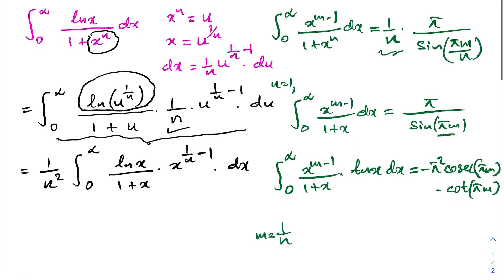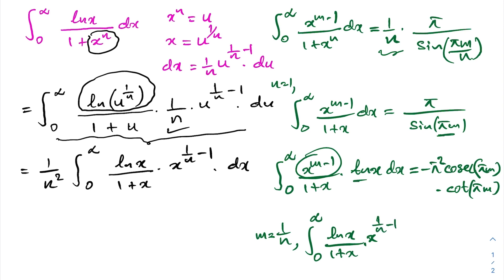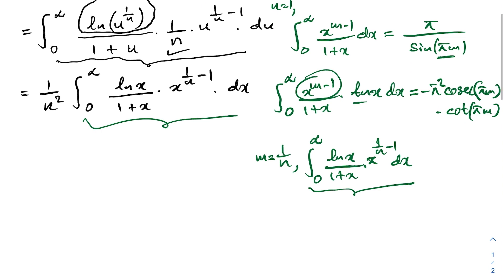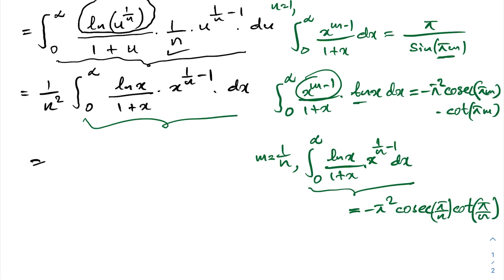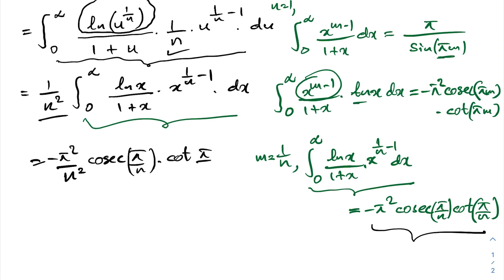Now I set m equal to 1 over n. The left side becomes exactly the integral from 0 to infinity of x to the 1 over n minus 1 times natural log of x over 1 plus x, dx, which matches our transformed integral. Combining with the 1 over n squared prefactor, the final answer is minus pi squared over n squared times cosecant of pi over n times cotangent of pi over n.